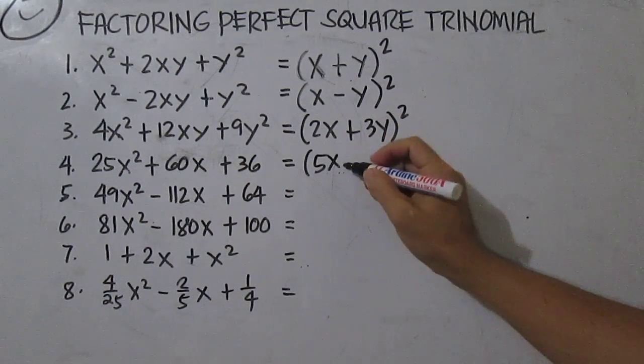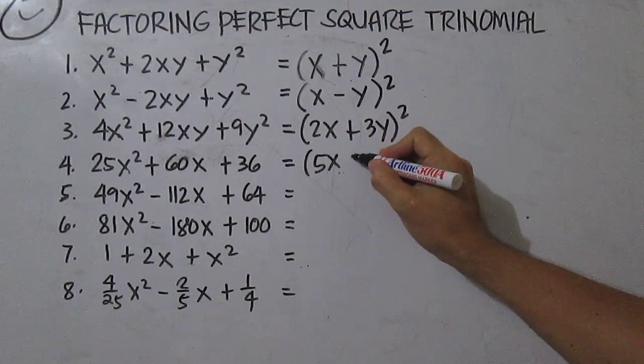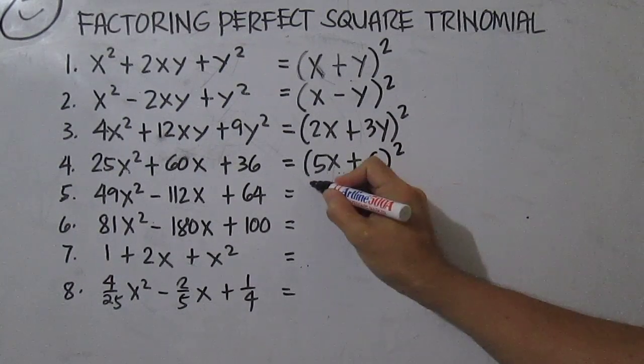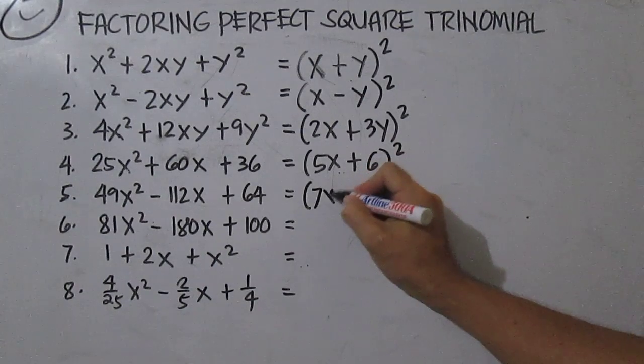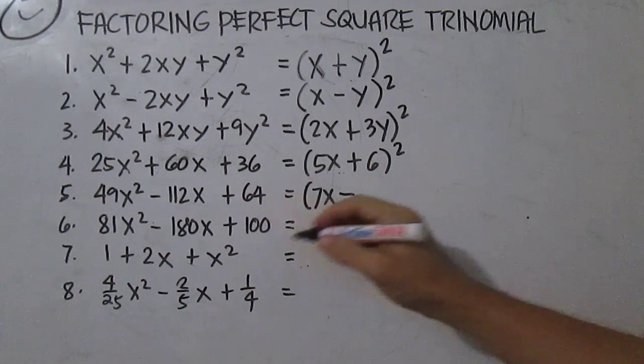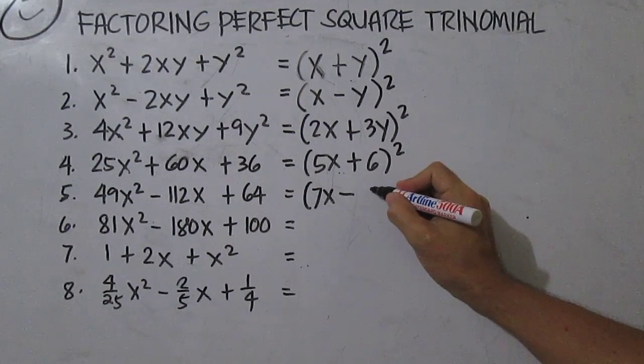For number four, the square root is 5x, and the square root of 36 is 6, then squared. For number five, the square root of 49x squared is 7x, then we have a minus sign here, minus the square root of 64.